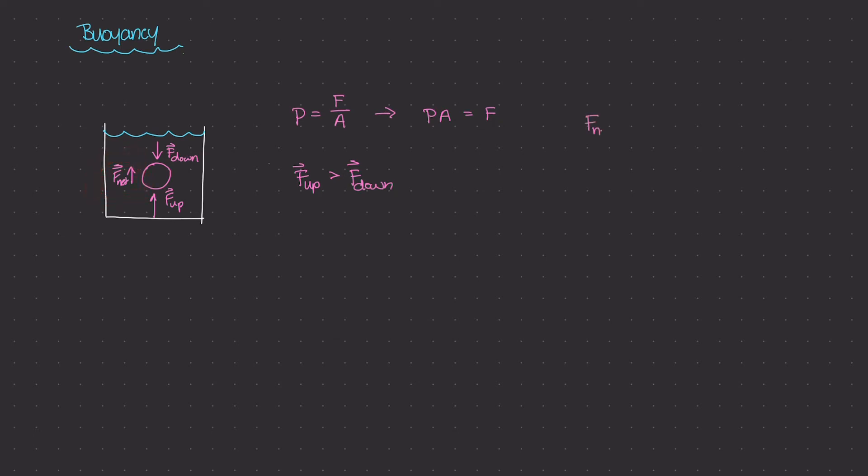Well, the magnitude F net is equal to the magnitude of the upward force minus the downward force. And this F net is essentially the buoyant force that is acting on this object to push the object up.